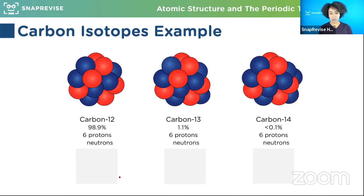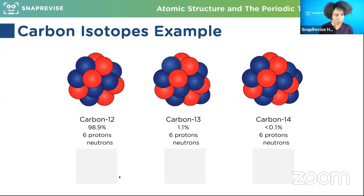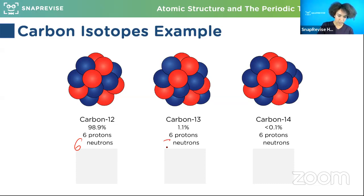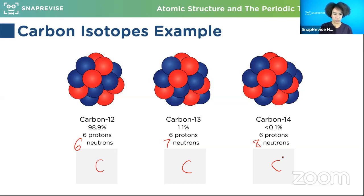We're going to think about carbon as an example. We have carbon-12, carbon-13, and carbon-14. We want to first do some quick maths and figure out how many neutrons each has. Carbon-12 has six protons - how many neutrons? Six neutrons. For carbon-13 we've got seven neutrons, and eight for carbon-14. Now I'm going to write in the element - what goes on the top and what goes on the bottom? Top is the atomic number, which is six for all of them.